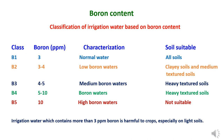Classification of irrigation water based on boron content. On the basis of boron content, water is classified into five groups. First, class B1, where boron content is less than 3 ppm — treated as normal water, suitable for all soils. Second, class B2, where boron content ranges between 3 to 4 ppm — characterized as low boron water, suitable for clay soils and medium textured soils. Third, class B3, where boron content ranges from 4 to 5 ppm — known as medium boron water, suitable for heavy textured soils.